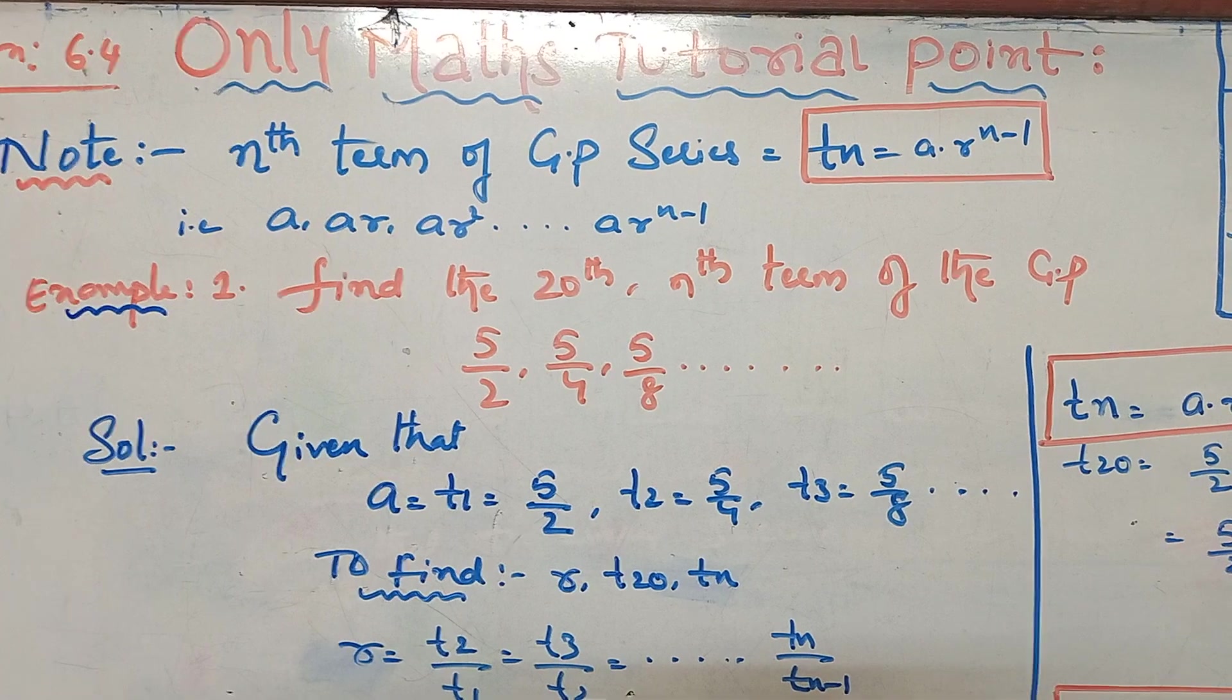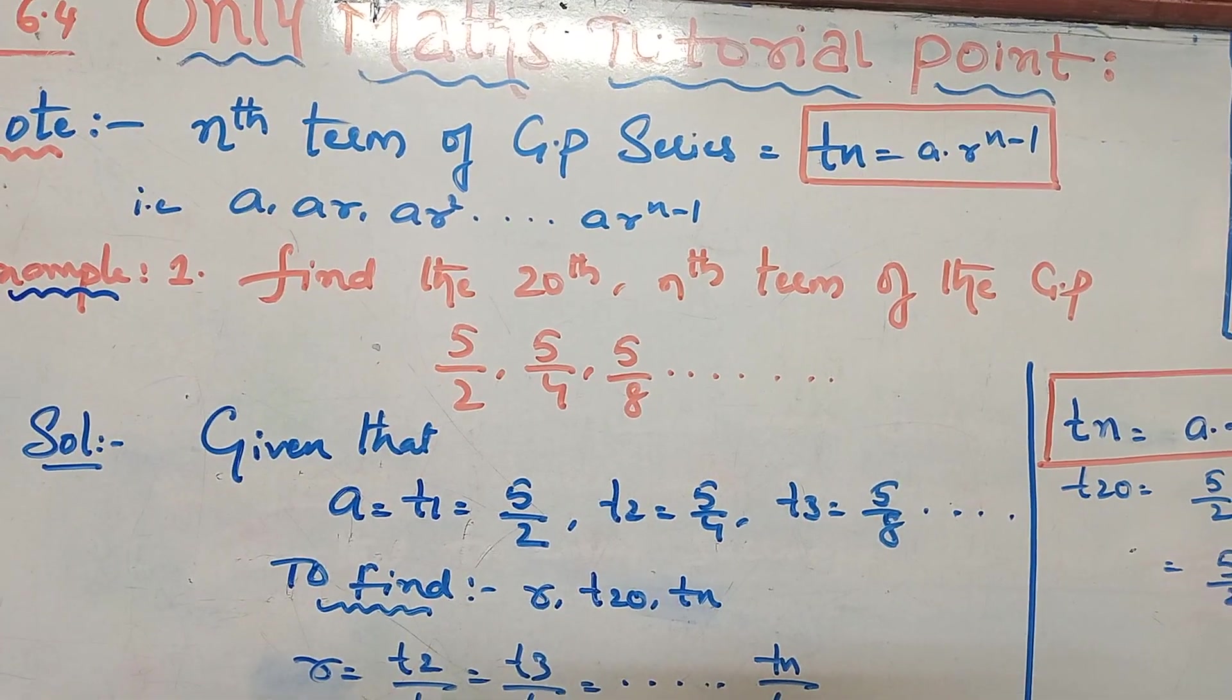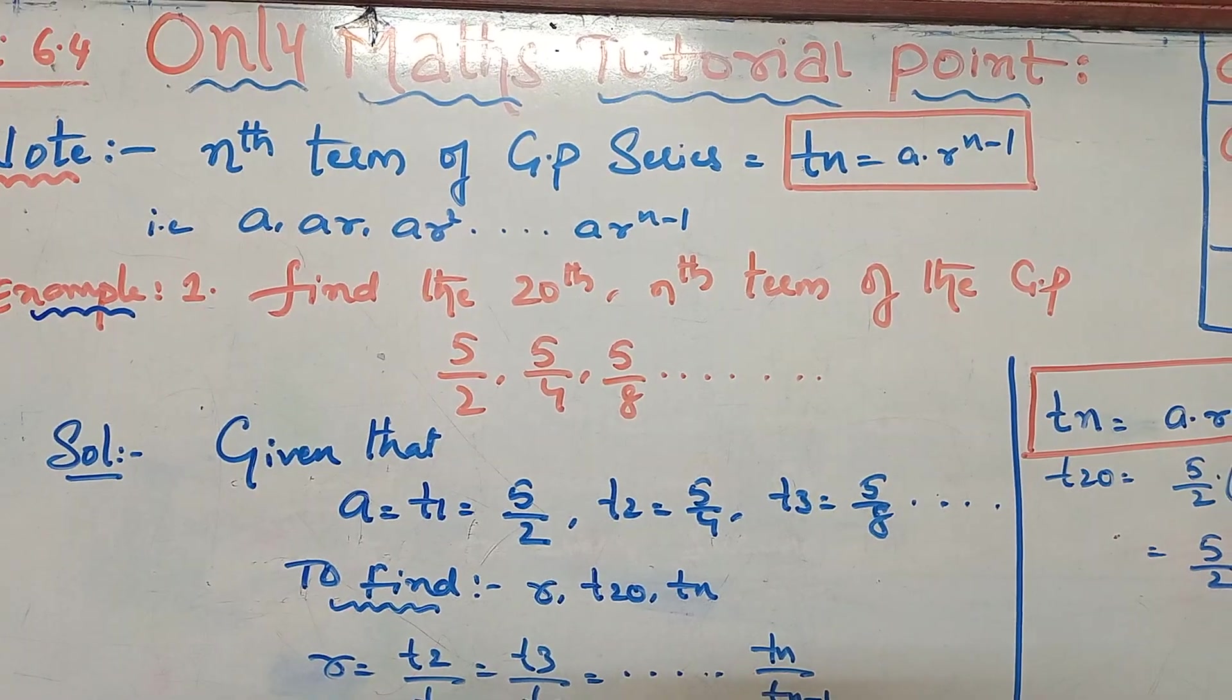Tn equals a dot r power n minus 1, where a, a r, a r square, and so on, a r power n minus 1 is a GP series.